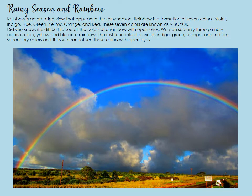We get to see rainbows during the rainy season. A rainbow is an amazing view that appears in the rainy season. A rainbow is a formation of seven colors: violet, indigo, blue, green, yellow, orange, and red. These seven colors are known as VIBGYOR.